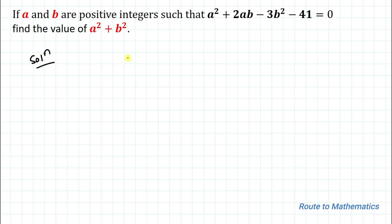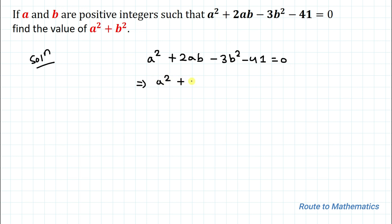So the given equation is a² + 2ab - 3b² - 41 = 0. Let's take 41 to the right-hand side, giving us a² + 2ab - 3b² = 41. In the next step, let's factorize this equation.